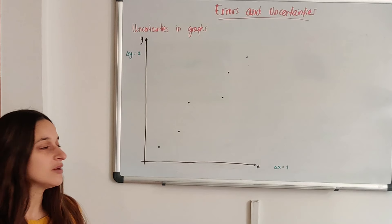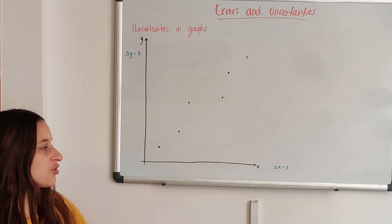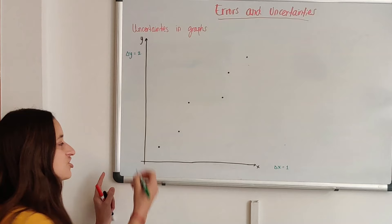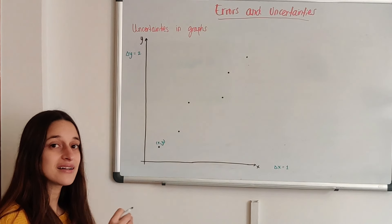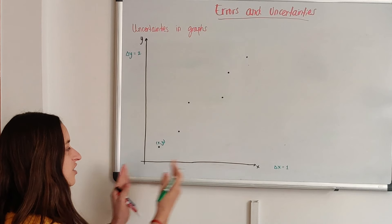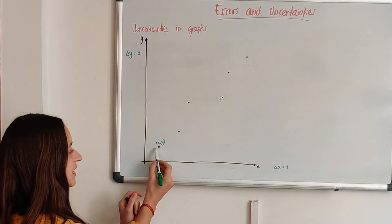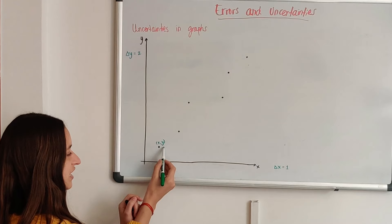If we had a scale here, then we can draw lines that show that our value, each number that has an x and a y, isn't just exactly there. But it could be anywhere from 1 less in x to 1 more in x, and from 2 less in y to 2 more in y.